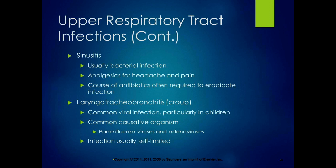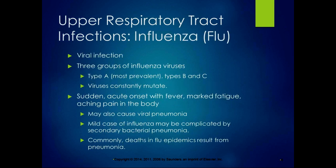Laryngotracheobronchitis, also known as croup, is a common viral infection particularly seen in children. The most common causative organisms are parainfluenza viruses and adenoviruses. The infection is usually self-limited, so treatment is symptomatic — you fill the bathtub with warm water for moist air, or use a humidifier. Even though it can be really hard for the child, you don't want to treat it with antibiotics because it's a virus.